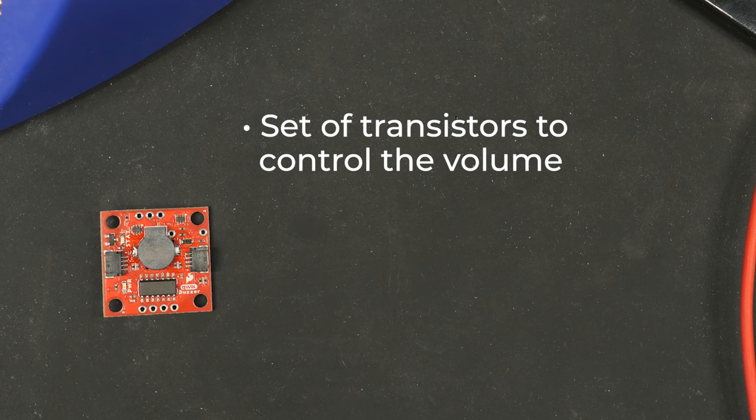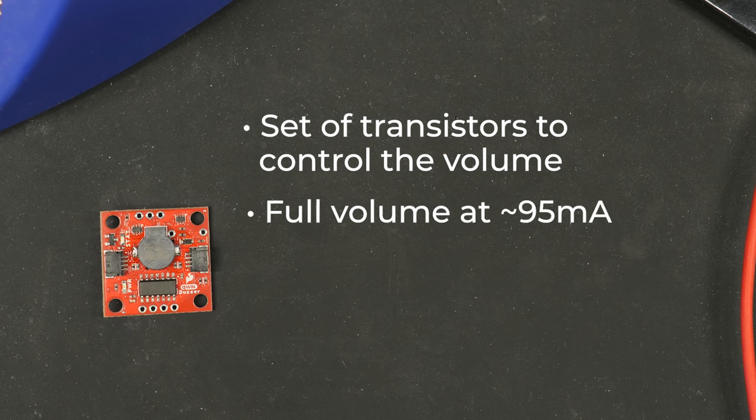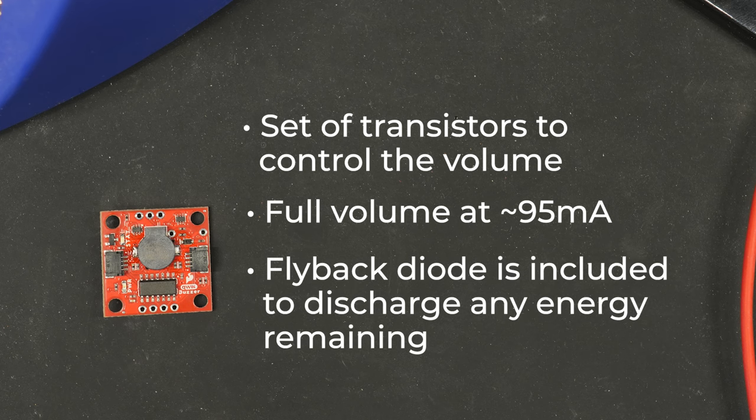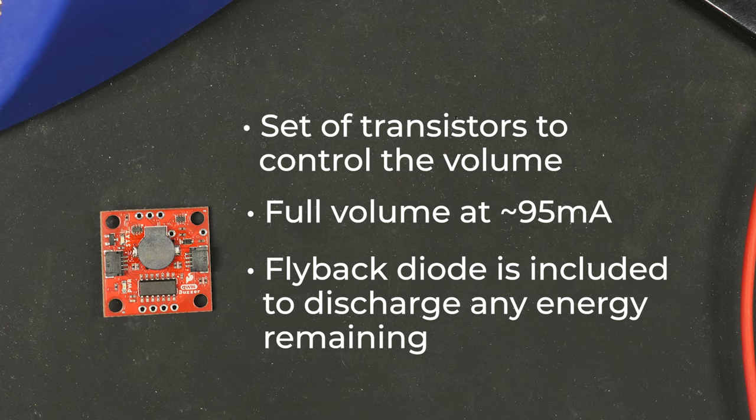The board has a set of transistors to control the buzzer's volume. Now, at full volume, it allows the full current of about 95 milliamps, which makes it pretty loud. A flyback diode is included to discharge any energy remaining when the buzzer's turned off. And this is really cool stuff, and in fact, I actually want to call on my old pal Pete to dig a little deeper into this for you.